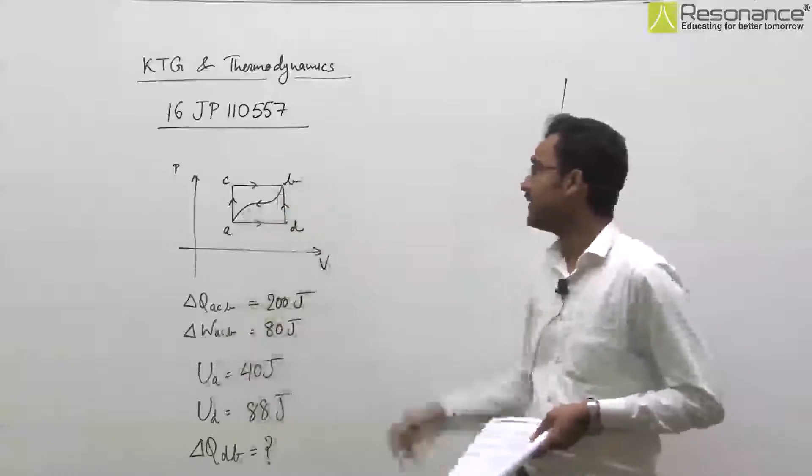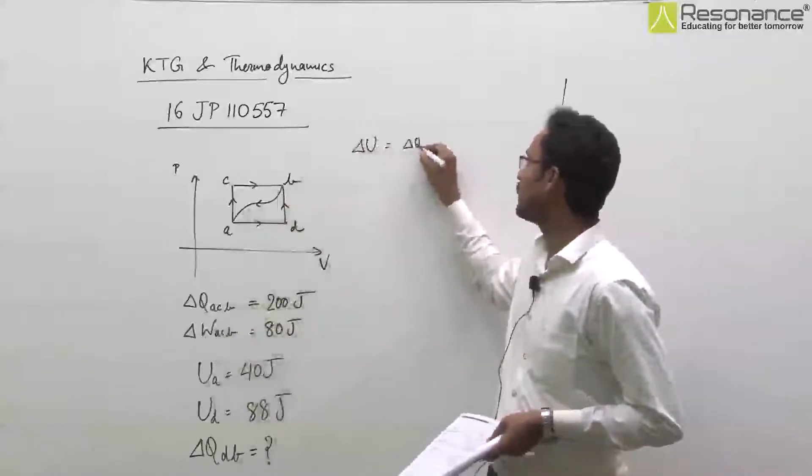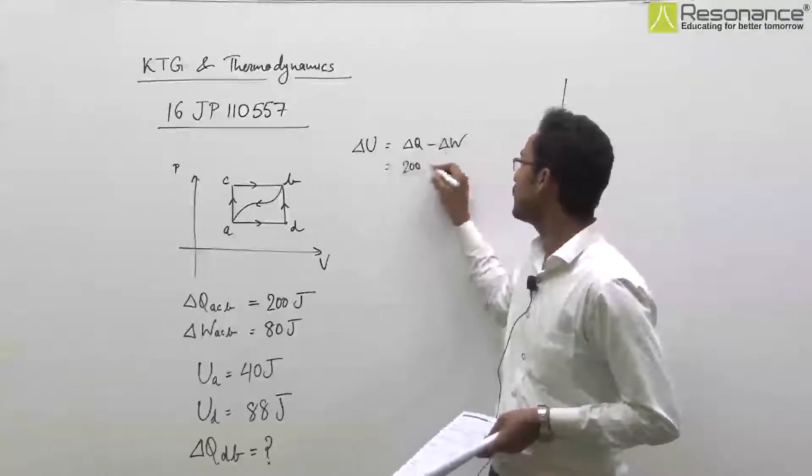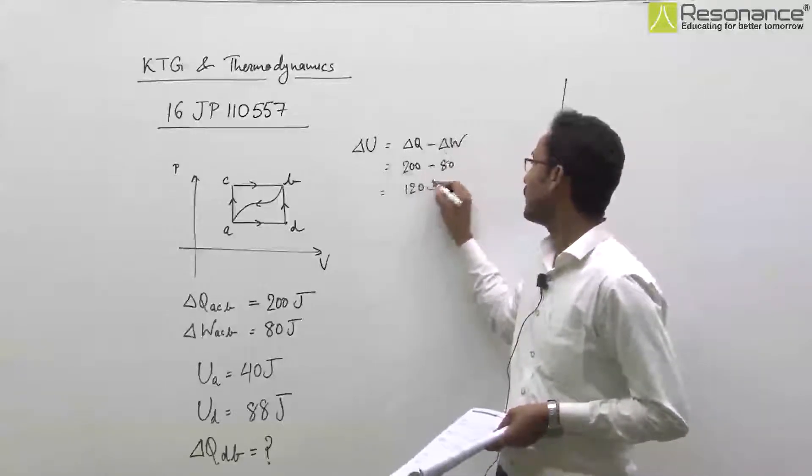A se B tak jane mein internal energy mein jo change hoga, delta U is equal to delta Q minus delta W, and this is equal to 200 joule minus 80 joule. That will be equal to 120 joule.